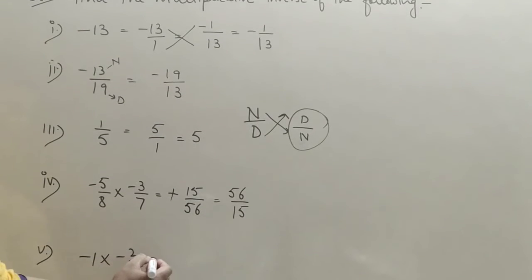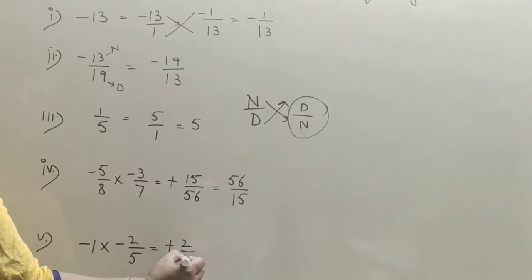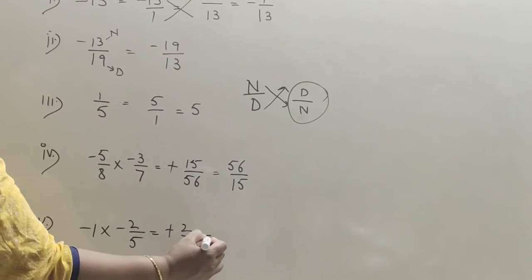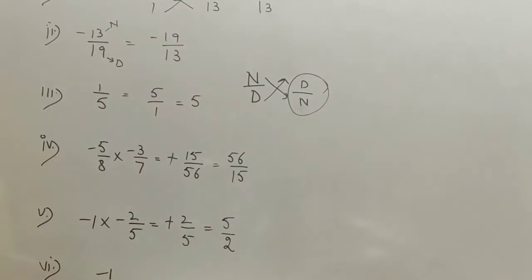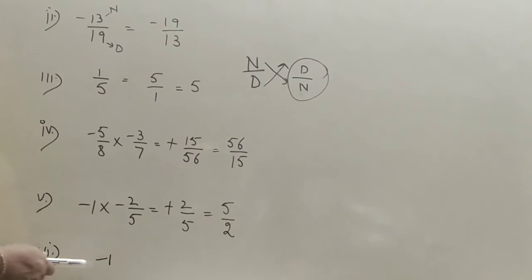Fifth part: here both are negative, answer will be positive, 2 upon 5. So the multiplicative inverse of 2 upon 5 is 5 upon 2.